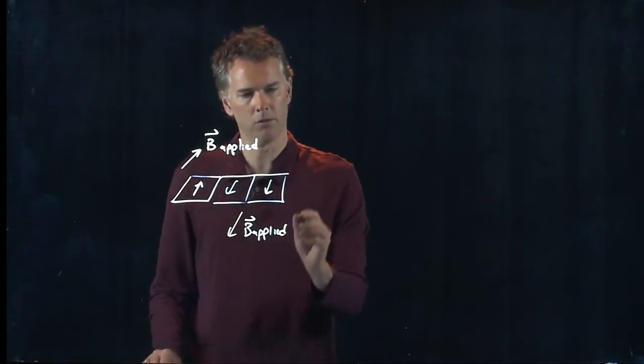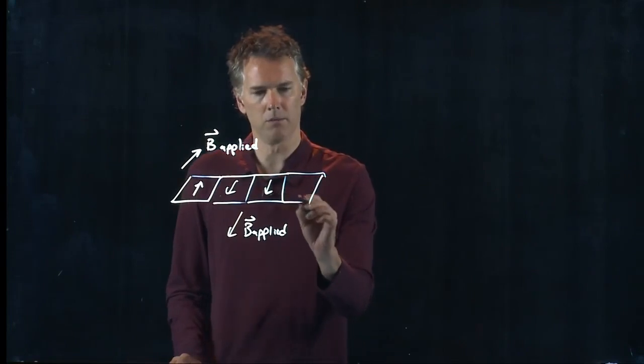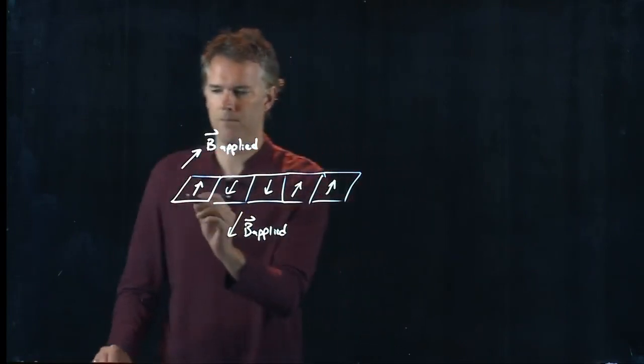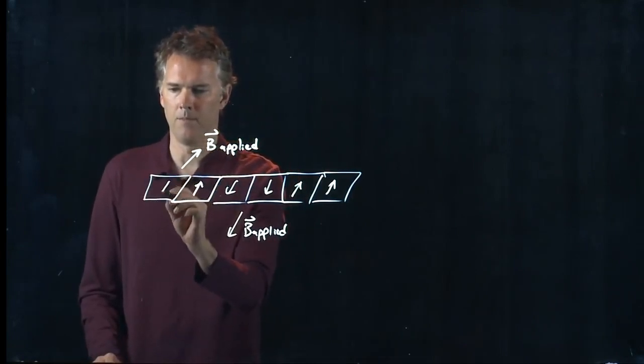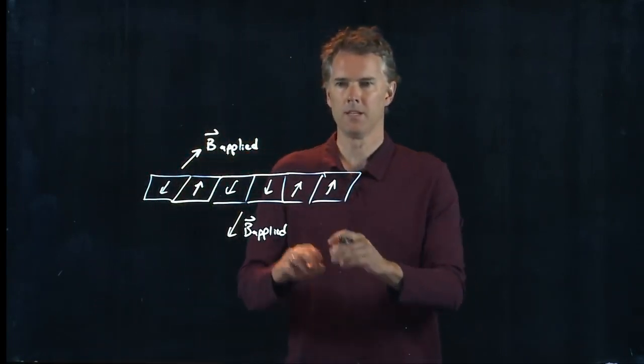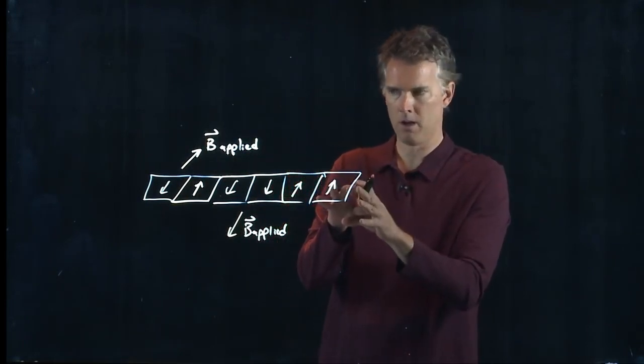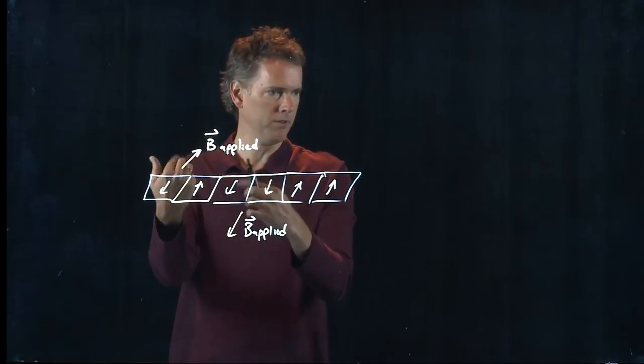Let's say this one is pointing this way, this one is pointing this way, that way, this way. To get these dipoles to point in a particular direction all I have to do is flip the direction of my applied B field.